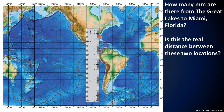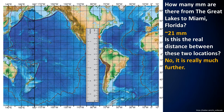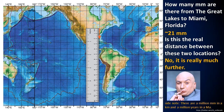Here, we place a ruler on the map and we will use the metric units on the ruler. The units here are labeled in centimeters, but let's use millimeters — there are 10 millimeters in a centimeter. There are about 21 millimeters between the Great Lakes and Miami, Florida. This is not the real distance between these two locations; it is really much further. As a side note, we know that there are a million millimeters in a kilometer and a million years in a million years, so later it will be simple to convert from kilometers per million years to millimeters per year.